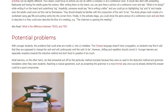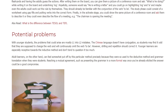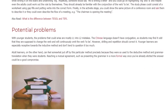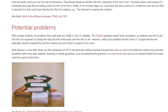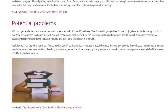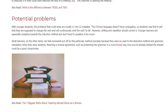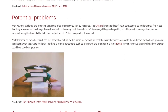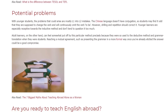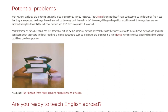Potential problems: with younger students, the problems that could arise are mostly L1 into L2 mistakes. For example, the Chinese language doesn't have conjugation, so students may find it odd that they are supposed to change the verb and will continuously omit the verb 'to be.' However, drilling and repetition should correct it. Younger learners are especially receptive towards the inductive method and don't tend to question it too much.